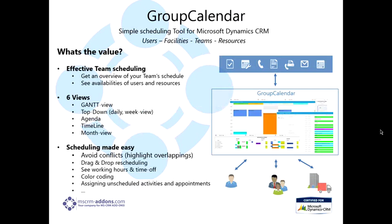The next add-on is Group Calendar. It's basically a simple scheduling tool for Microsoft Dynamics CRM. It covers users, facilities, teams, and resources. It's just a whole better calendar than what's in Dynamics CRM right now. It gives you effective team scheduling — you can get an overview of your team's schedule, individual user's schedule, or a resource's schedule, and see all availabilities of users and resources right there at one glance from the calendar itself.